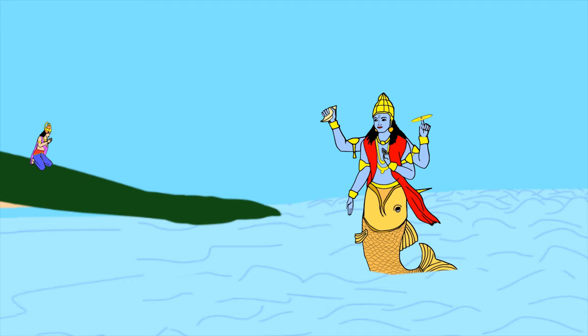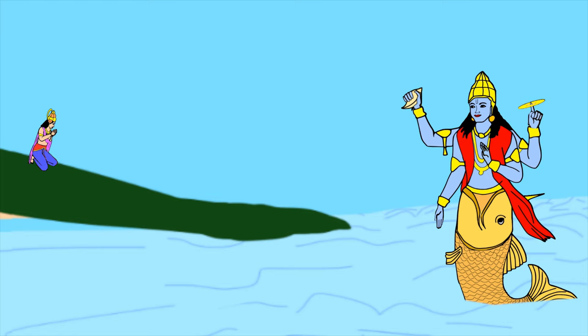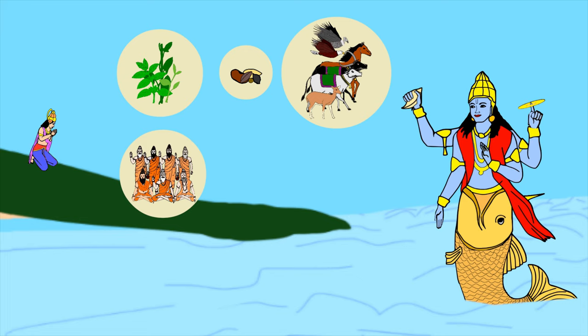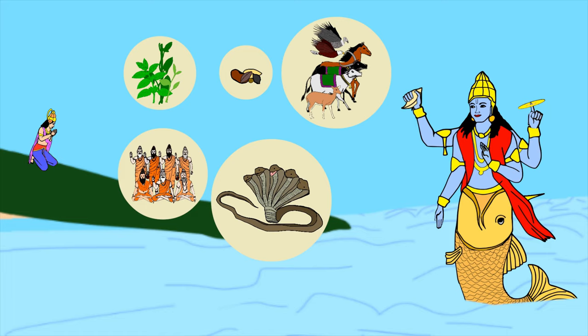Lord Vishnu appeared and told him that in seven days the world will be submerged by the ocean, destroying all creation. He asked Satyavarat to collect herbs, seeds, animals, the sapta-rishis and Vasuki, the king of the serpents, and wait for the boat that he will send.